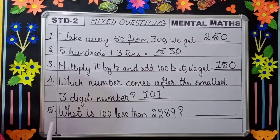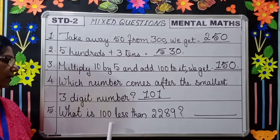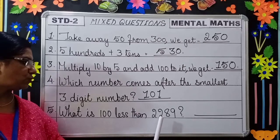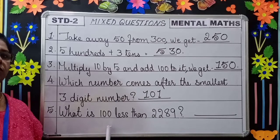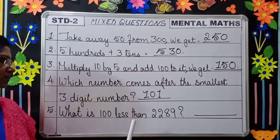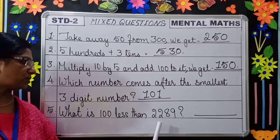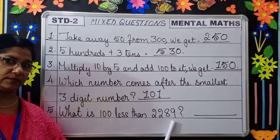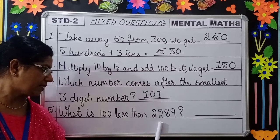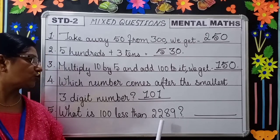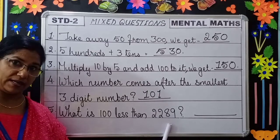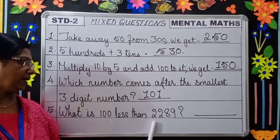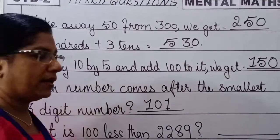Moving to the next question. Question number five: what is 100 less than 2289? Less than means you have to subtract. Subtract 100 from 2289. At the hundreds place, 289 minus 100 gives 189, so the answer will be 2189.